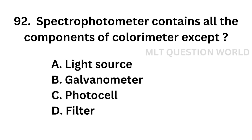Question number 92. Spectrophotometer contains all the components of colorimeter except: Option A: Light source. Option B: Galvanometer. Option C: Photocell. Option D: Filter.